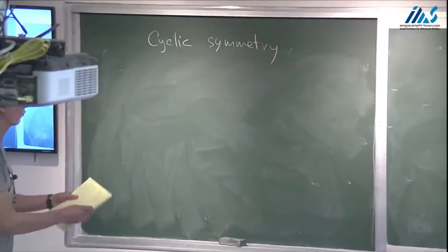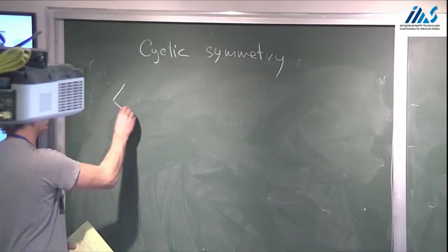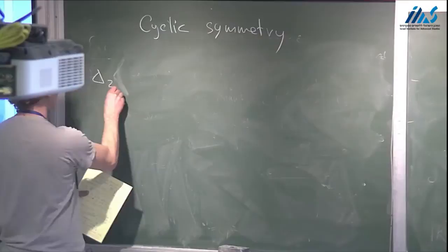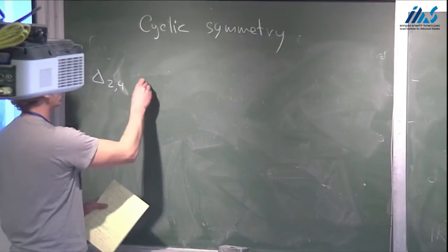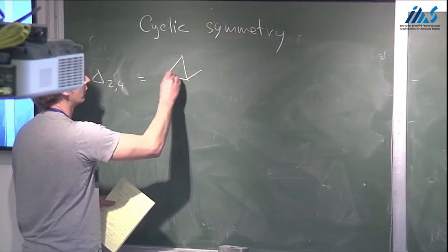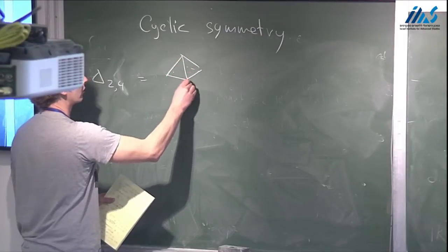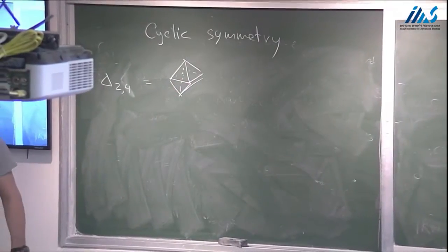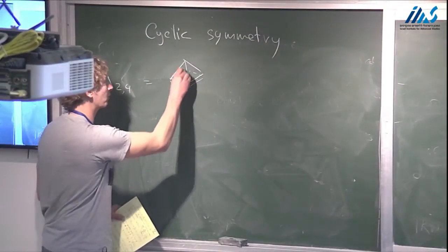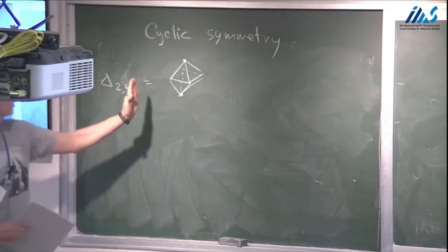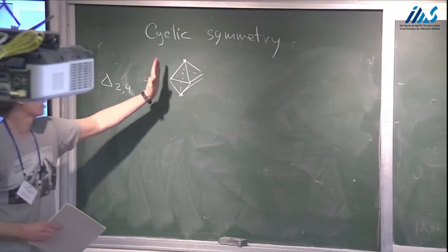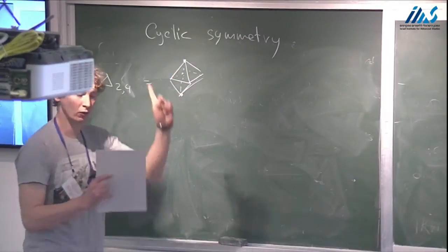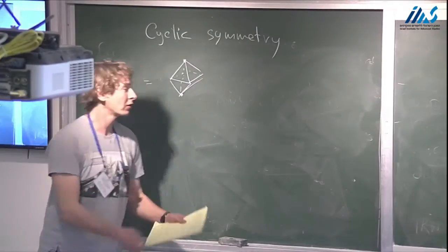So, cyclic symmetry. One manifestation of this: we considered the hypersimplex delta 2,4, which is the octahedron. The octahedron has this special vertical diagonal, and the cyclic symmetry is rotational — you can rotate it around the vertical diagonal and everything is preserved.